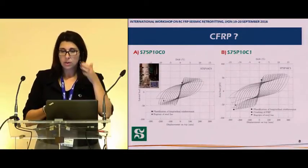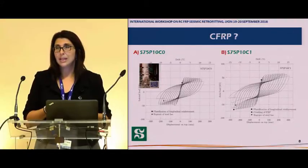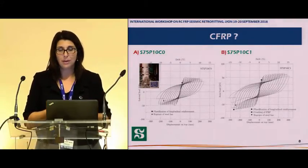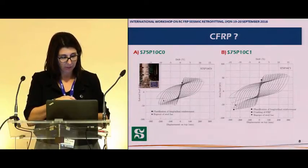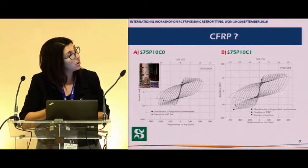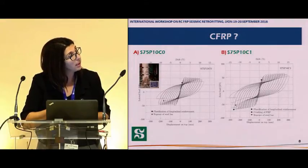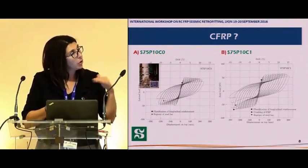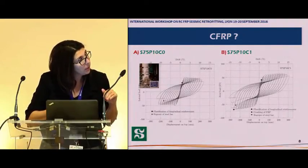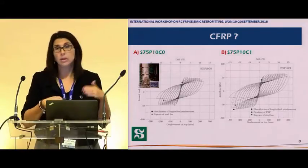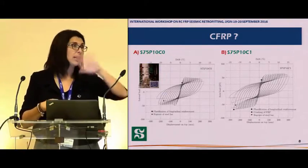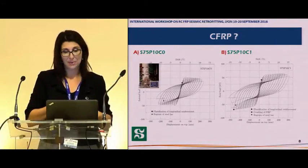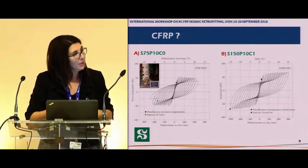Showing the results quickly — as we expect and know, you gain ductility with the wraps. Here you have results for the column with small spacing, no wraps versus one wrap with small axial load. You can see we gain a little bit of strength but not that much; however, we gain a lot in terms of ductility. We characterized everything and published about it, and of course it is a well-known result.